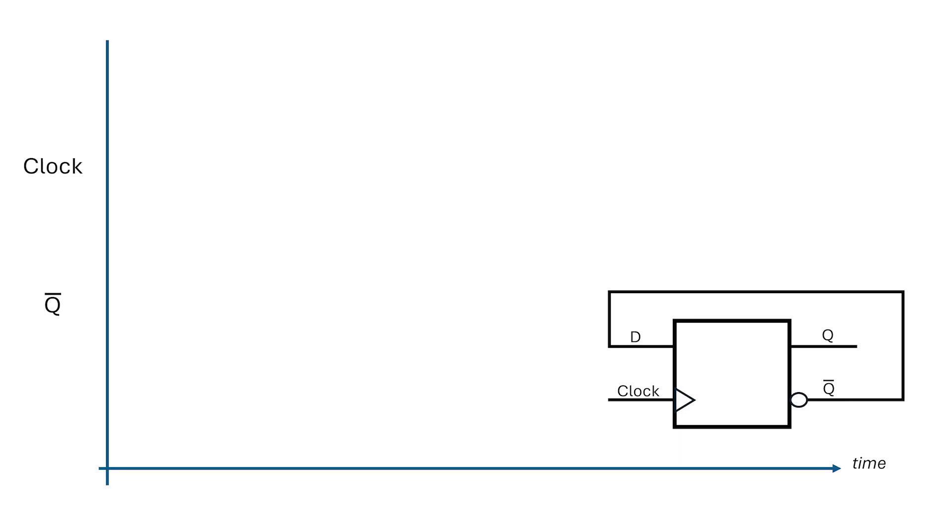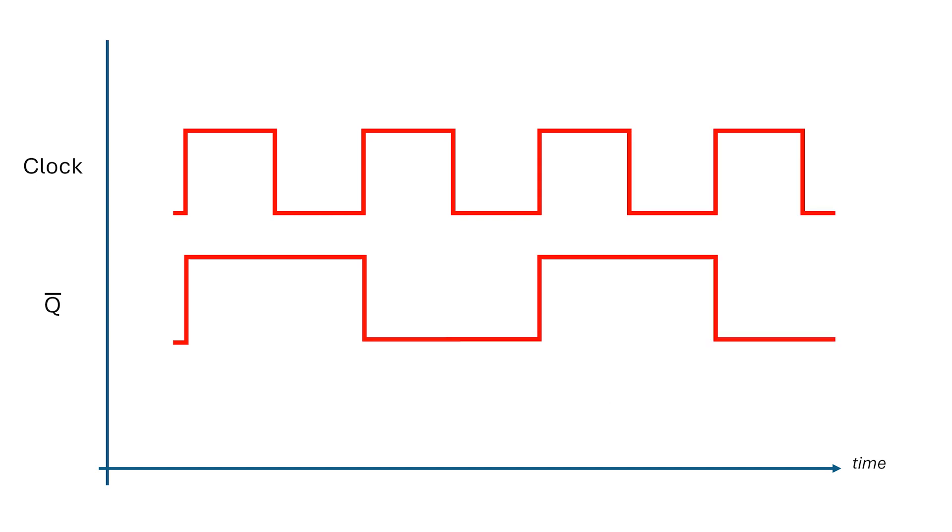Let's plot this out, but I'll draw in Q-bar for a reason we'll see in a minute. We have a positive edge on clock, Q-bar toggles from 0 to 1, nothing happens on the negative edge of clock, and then we get another positive edge of clock, and Q-bar toggles again from 1 to 0 this time. Another negative edge, nothing, but on the third positive edge of clock, Q-bar toggles again. This cycle continues forever.